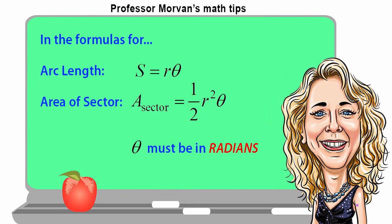Just a quick reminder here that in the formulas for arc length and area of a sector, theta must be in radians. So you'll always want to double check that you haven't left your angle in degrees, that you've converted it into radians so that you get the correct answers.